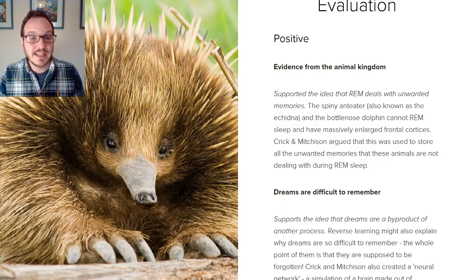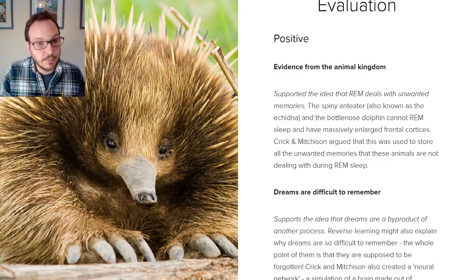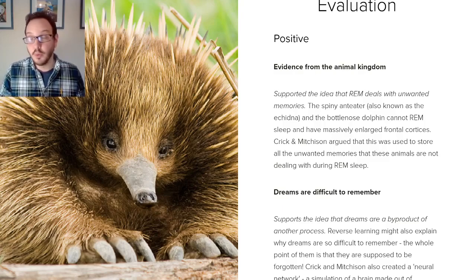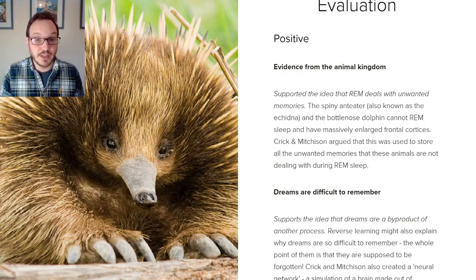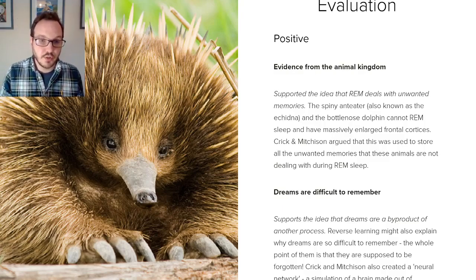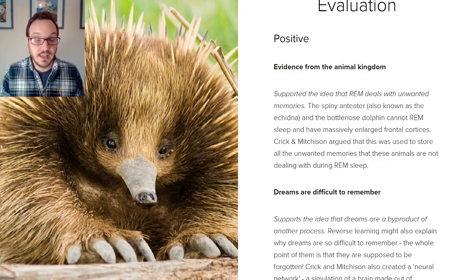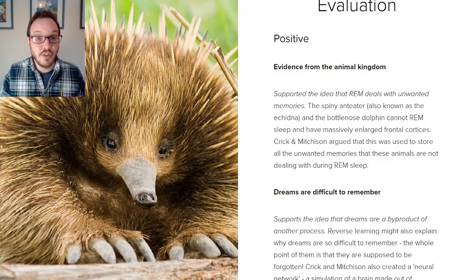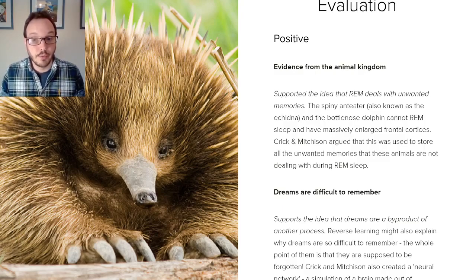The reason for this is that they can't go into REM sleep for one reason or another. So the brain needs way more storage space for all the weird stuff they've seen and all the useless parasitic memories than we do. Because we can reverse learn — because we can get rid of all this useless information — we don't need huge storage spaces. The echidna cannot, and so the echidna needs these huge storage spaces. That seems to support the idea that reverse learning deals with parasitic memories and that this occurs during REM sleep.